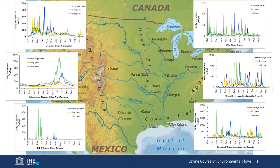That's the beauty and allure of the natural flow paradigm. Given its role as a master variable, built into the characteristics of the natural flow regime of any river is all we need to know about the spectrum of conditions to support the adapted needs of every native species. By focusing on this controlling variable, which in many parts of the world we have been monitoring for decades, we are able to preserve the still not fully understood dynamics of diverse aquatic ecosystems worldwide.